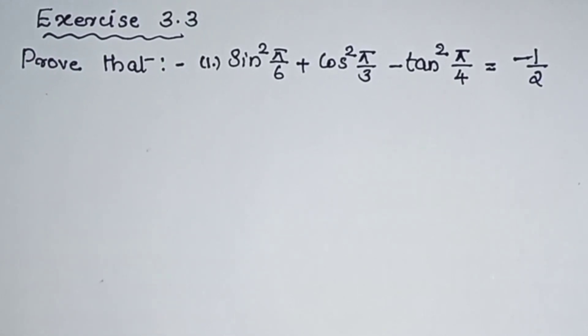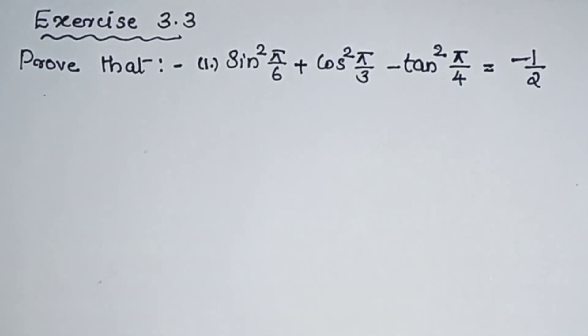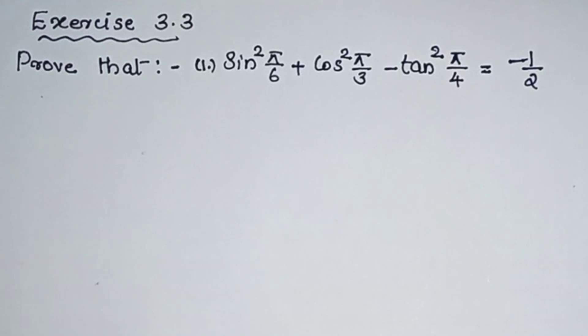First question. Prove that sin square pi by 6 plus cos square pi by 3 minus tan square pi by 4 is equal to minus 1 by 2.